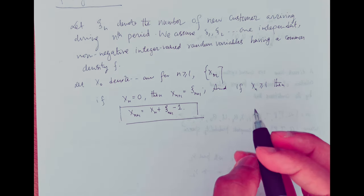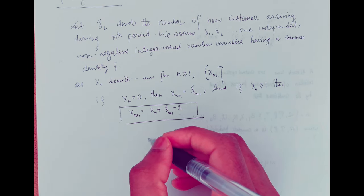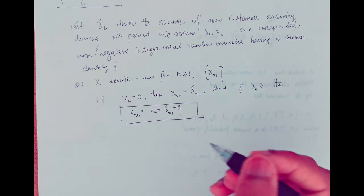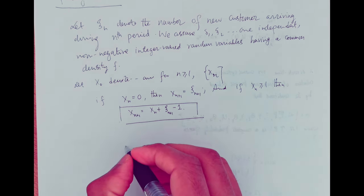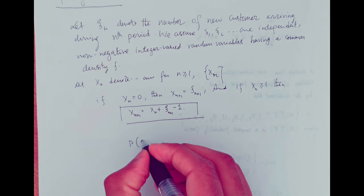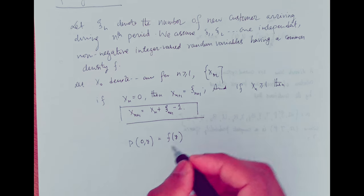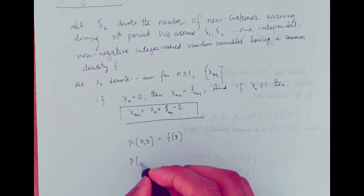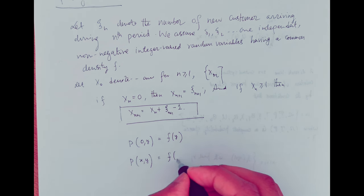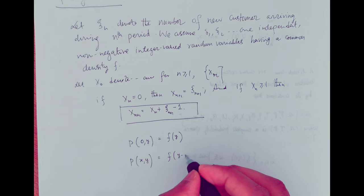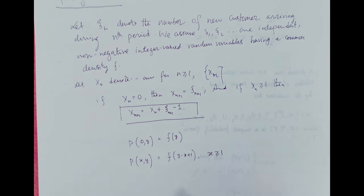It follows without difficulty from the assumption on xi_n, for n greater than or equal to 1, that xn is a Markov chain whose state space is non-negative integers, whose transition probability function p is given like this: P0y equals f of y and pxy equals f of y minus x plus 1, for x greater than or equal to 1.